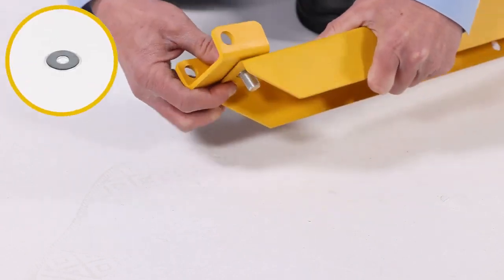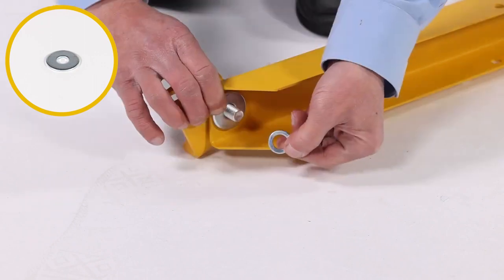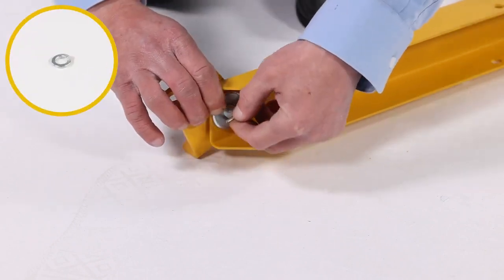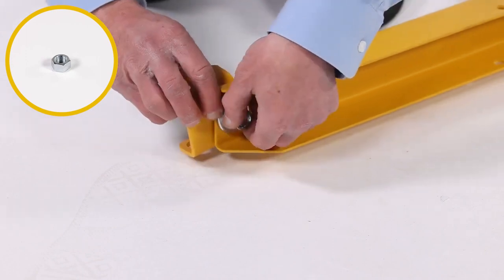From below, slide on the 17/32 by 1 1/2 inch by 9/64 inch washer, Part O, and a 1/2 inch lock washer, Part R. Secure the assembly with a 1/2 inch jam nut, Part L.